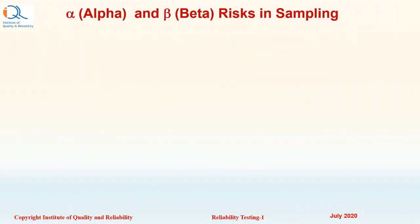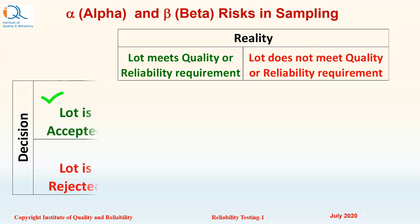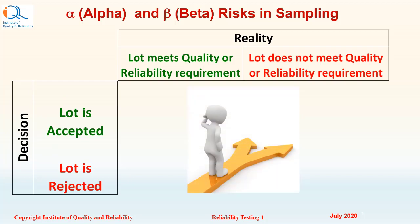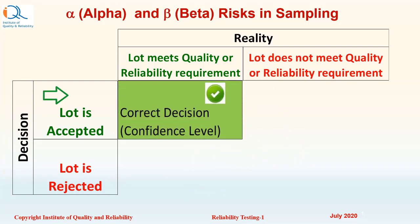Let us understand alpha and beta risks in sampling. In reality, there are two possibilities: the lot either meets quality or reliability requirements, or the lot does not meet quality or reliability requirements. Our decision could be that we accept the lot or we reject the lot. If we take a decision of accepting the lot when the lot meets quality or reliability requirements, this would be the correct decision, and the probability of this correct decision is called confidence level.